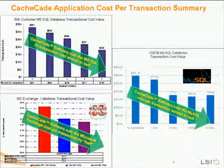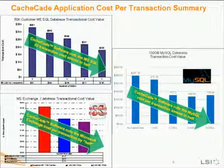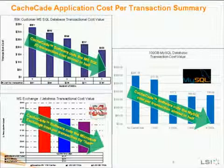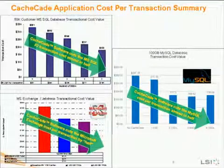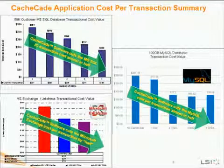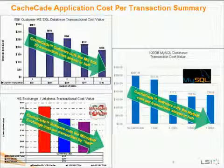Beyond the actual overall transactional performance increases, even though SSDs cost significantly more than hard disk drives, the actual cost per transaction goes down as you add SSDs to your Cascade array. In each of these instances, the Cascade software using SSDs will actually cause the cost per transaction to scale downward very significantly in all three application scenarios.